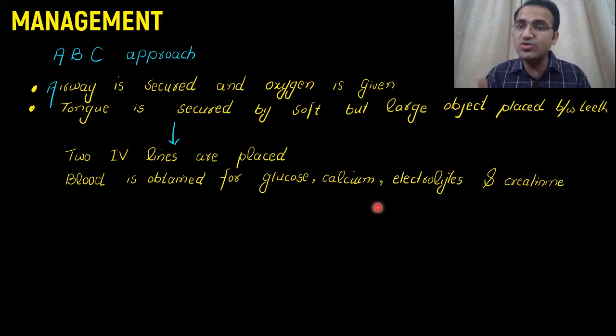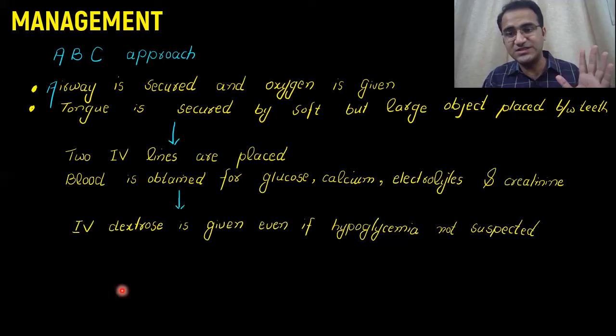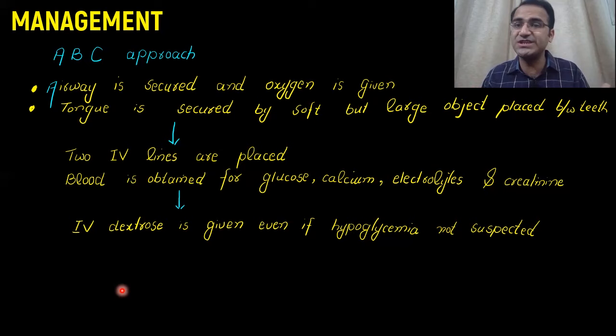IV dextrose is given even if you are not suspecting hypoglycemia. The increased muscular activity can result in hypoglycemia, and hypoglycemia is also a precipitating factor for status epilepticus. So IV dextrose is not going to do any harm — it will give an advantage to the patient.